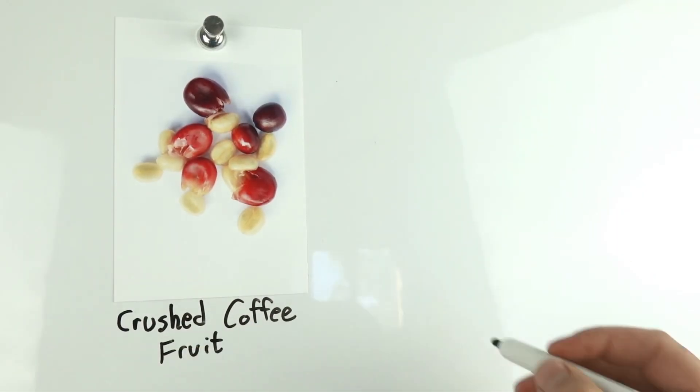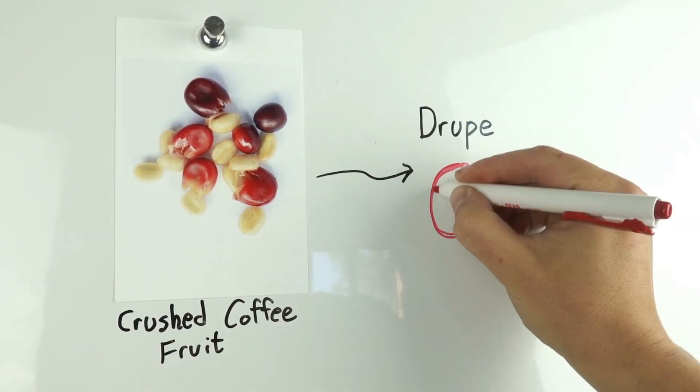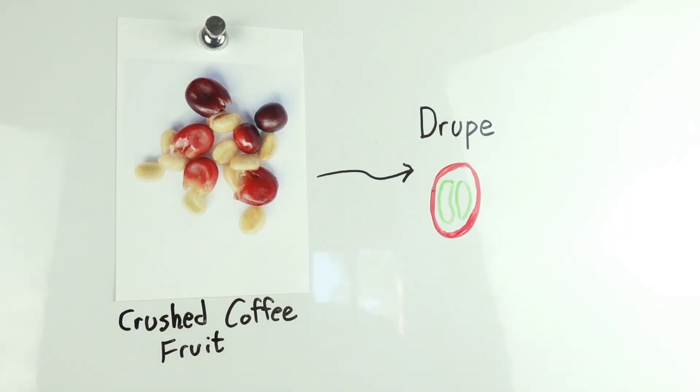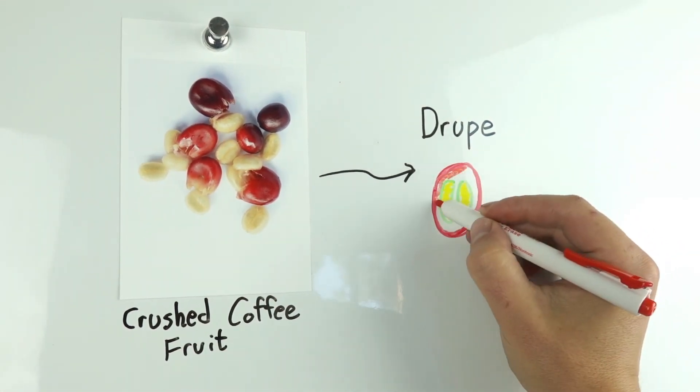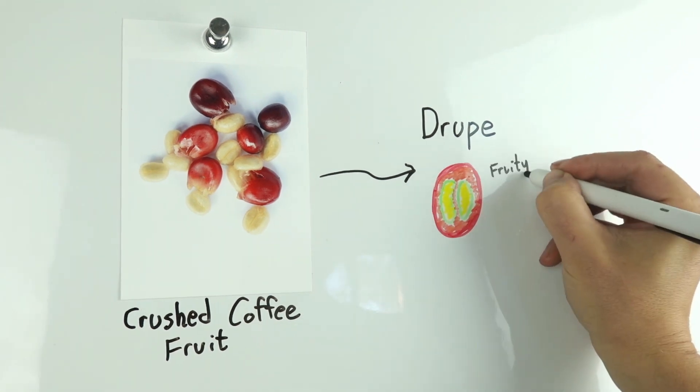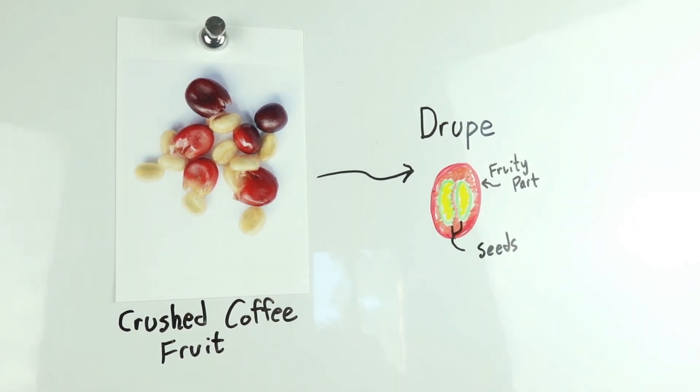Commonly called a coffee cherry, the fruit of a coffee tree is technically a drupe. A drupe is a botanical term for when a fleshy, fruity part surrounds an inner shell which contains a seed. In the case of coffee, usually there are two seeds inside of each drupe.